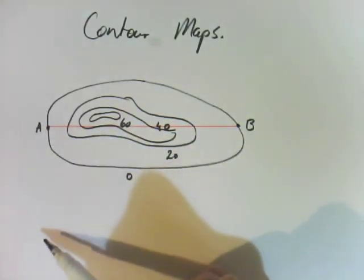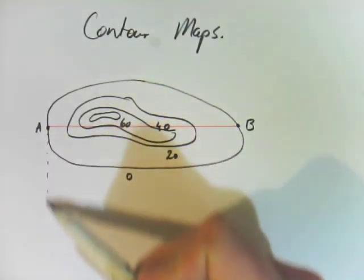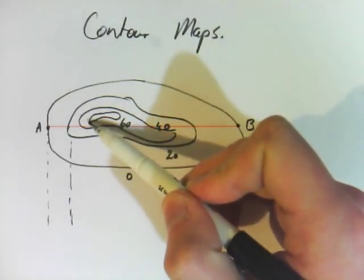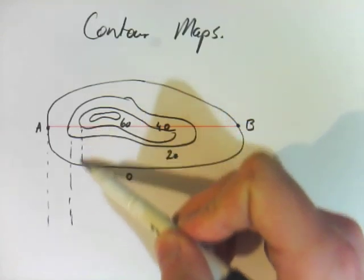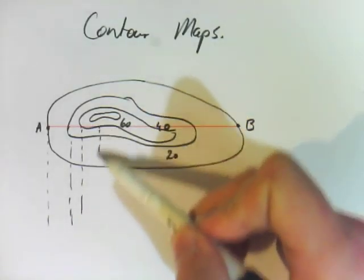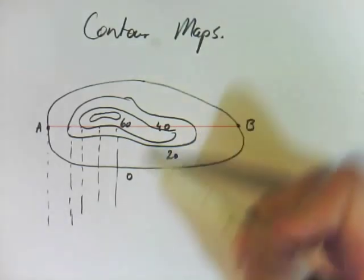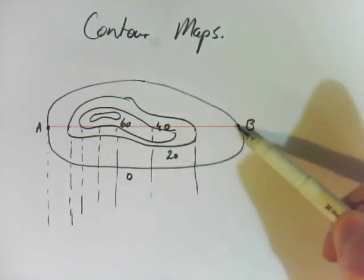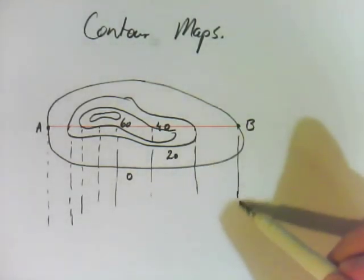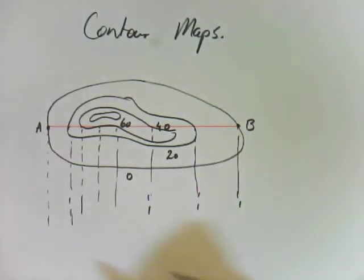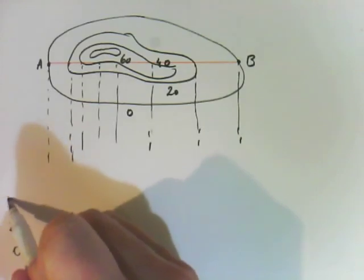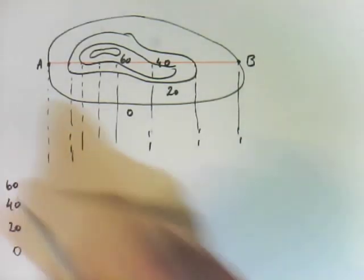What I do is draw lines down so I know where these lines touch. We need a scale — so this is 0, 20, 40, and 60.